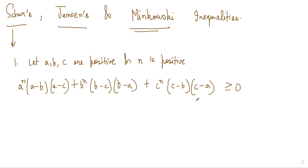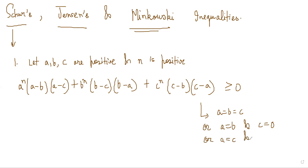The equality in this case is reached — it equals zero if a = b = c, or a = b and c = 0, or a = c and b = 0, or b = c and a = 0. So in these four cases there is equality. Otherwise, it is always positive.